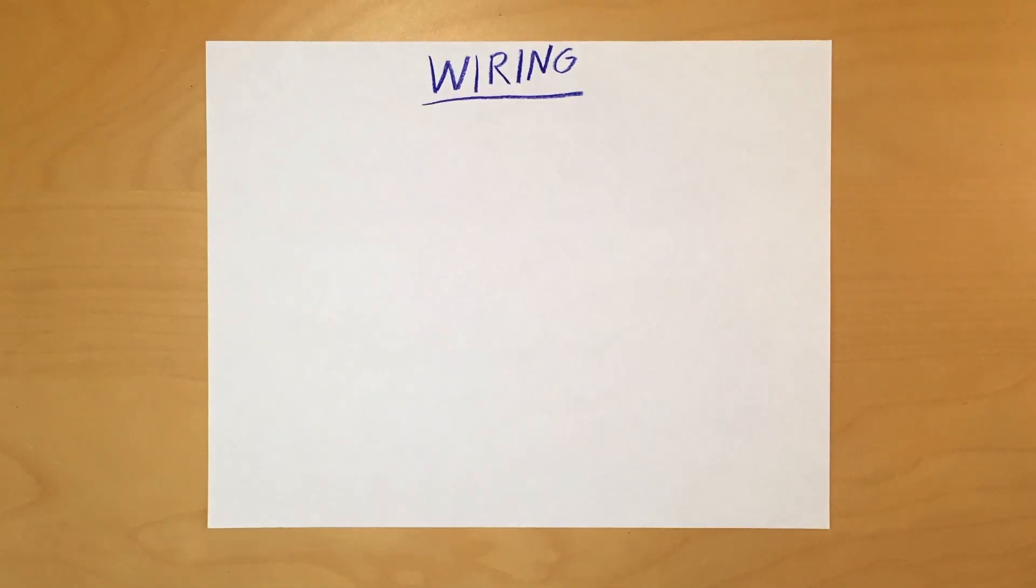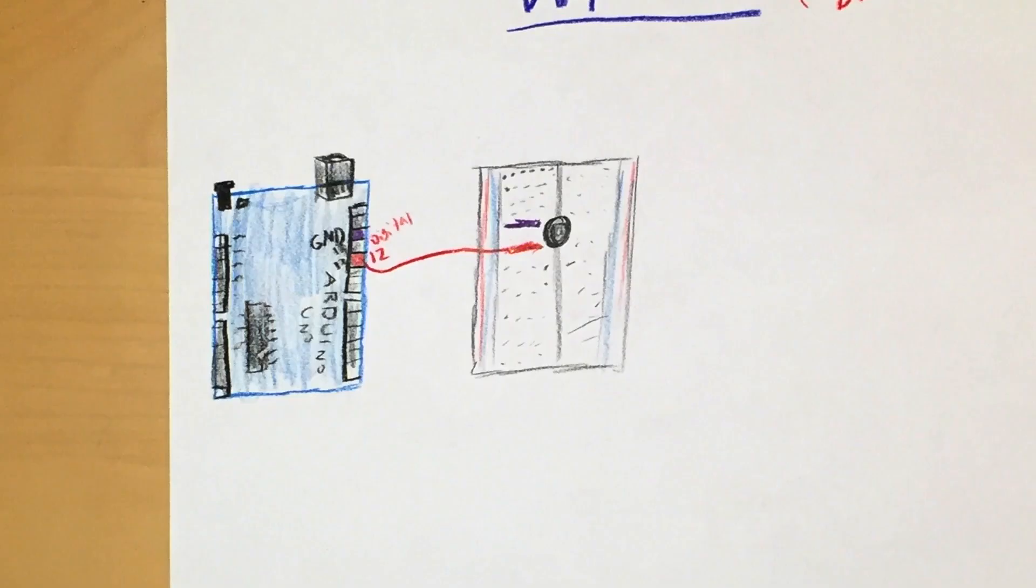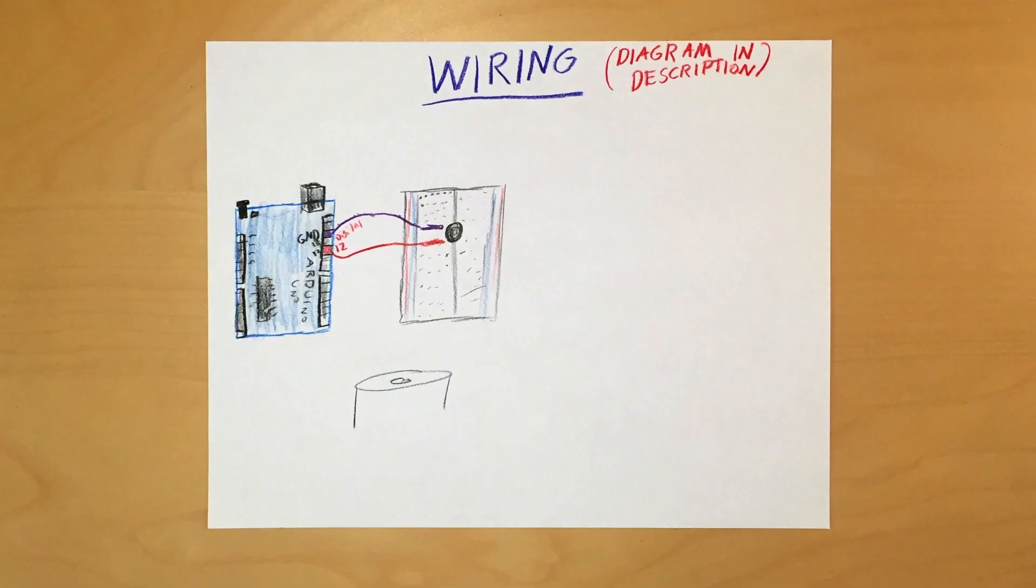Wiring this component is very easy. First, take the positive leg of the buzzer and connect it to a digital pin on your Arduino. In my case, I used pin 12. Then, take the negative leg and connect it to ground on your Arduino. You can tell the positive and negative legs apart by finding the small plus sign or circle on the positive side of the buzzer.